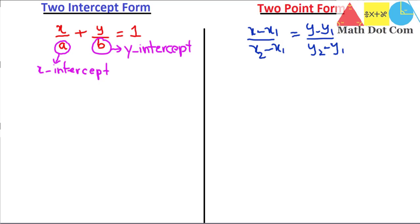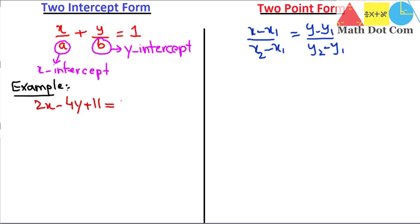These are the standard forms of the two-intercept form and two-point form. Now let's see — if you are given the equation of a straight line and asked to find its two-intercept form, how will you do that? The example is 2x minus 4y plus 11 equals 0. We have to find the two-intercept form. What is required? The x-intercept and the y-intercept. Let's find them one by one and put those values in the standard form.